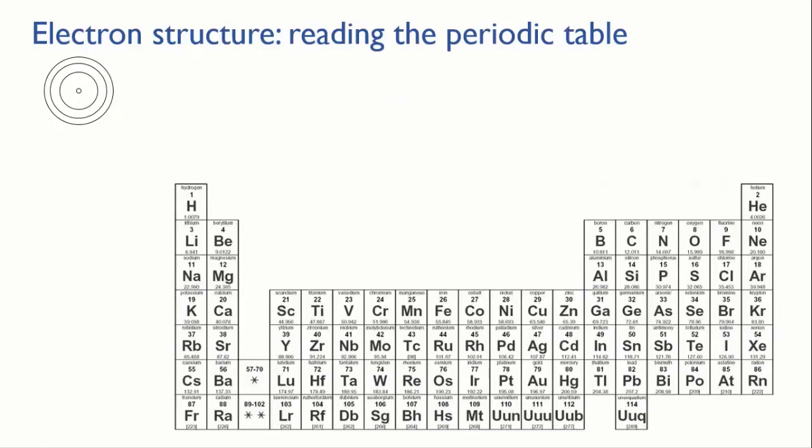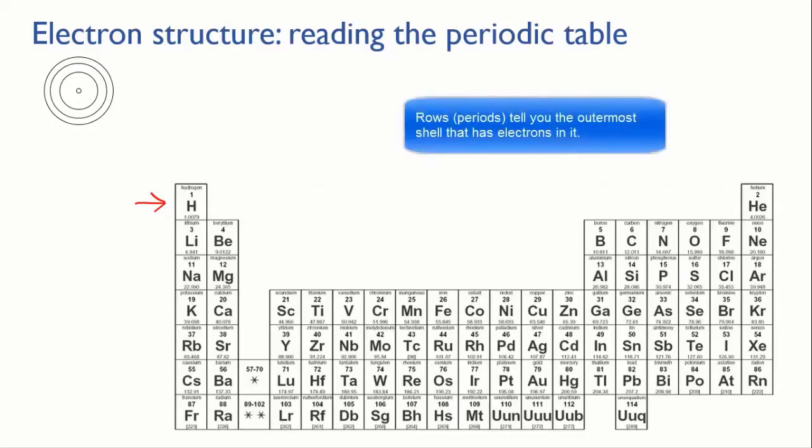But why not just have one long row of elements? Why make it into a table like this? And why are there only two elements in the first row, hydrogen and helium, and then eight in the second? Well, the rows of the periodic table, which are called periods, tell you which electron level is the outermost in that atom.